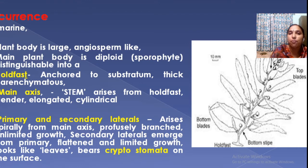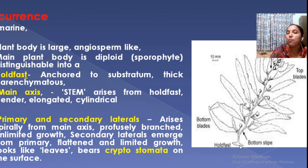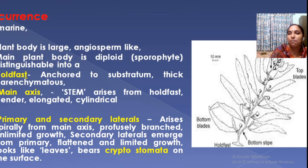The plant body is diploid. There are two main parts: the holdfast — the basal portion by which it attaches, similar to the root of higher plants — and the aerial portion, which is the main axis, the centermost portion like a tree trunk.